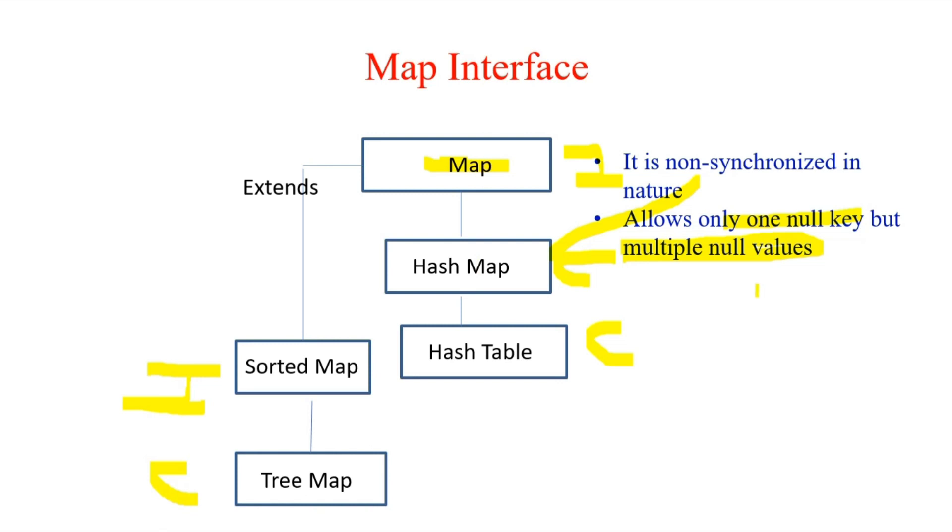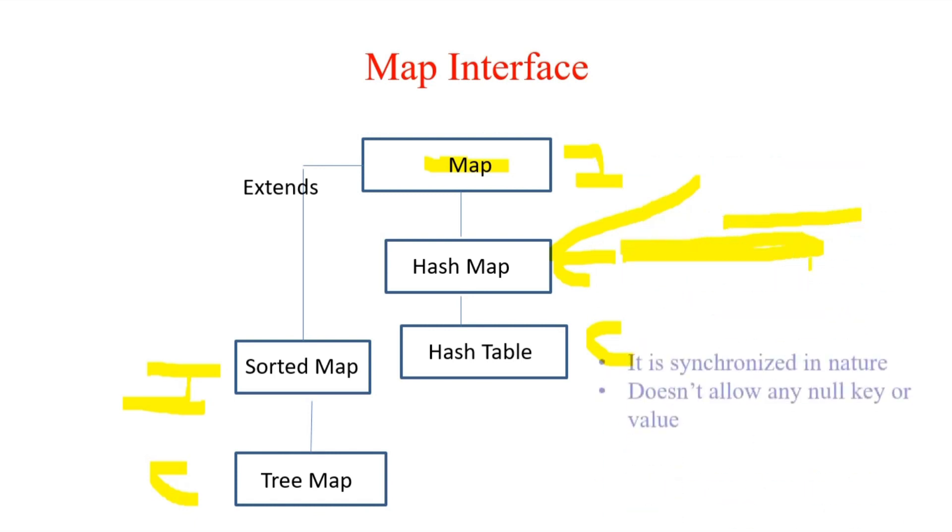Hence only one null key, which is a unique element, is allowed, not more than that. But multiple null values can be available in the HashMap. Now what about HashTable? HashMap was not synchronized, but HashTable is a synchronized collection in nature and it does not allow any null key or null value.